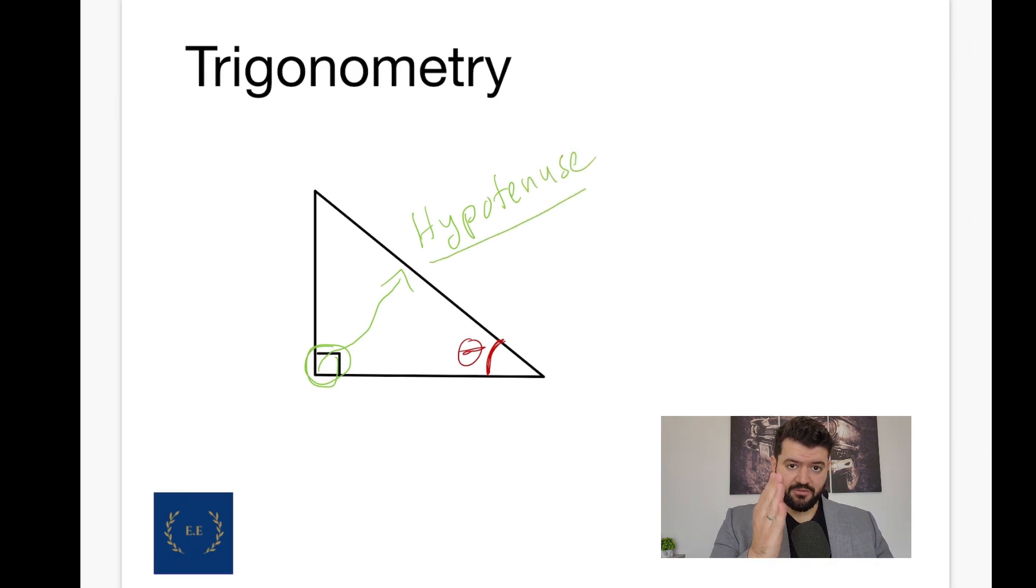This side is always in front of the 90 degree angle. If you take a look at the right angle triangle, find the 90 degrees, take a look in front of it. The side which is in front of the 90 degrees is my hypotenuse.